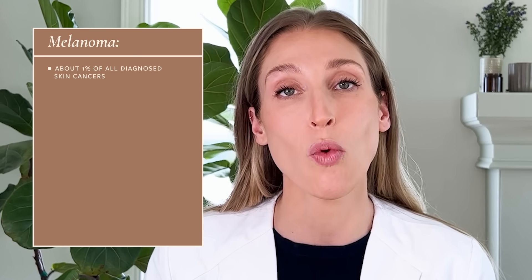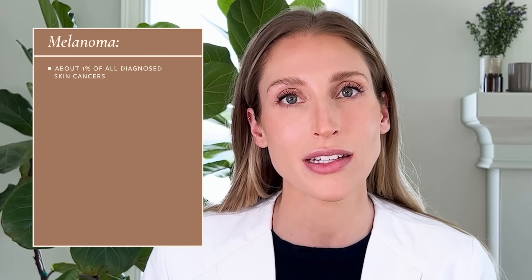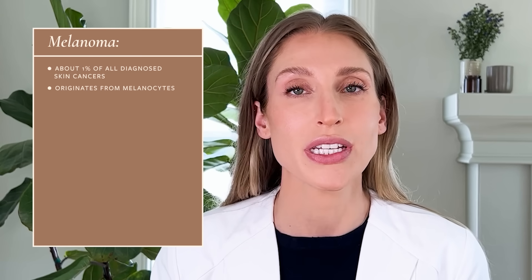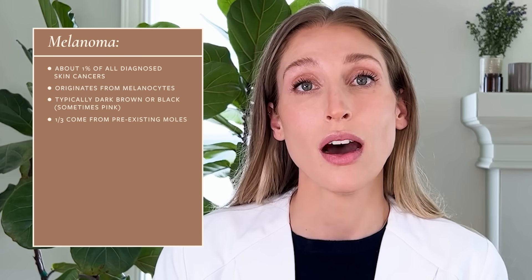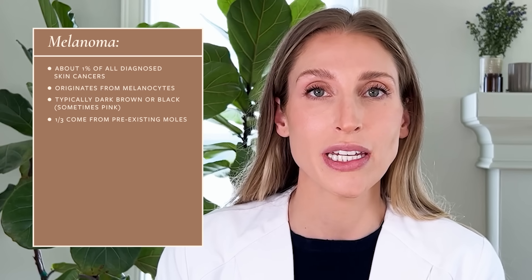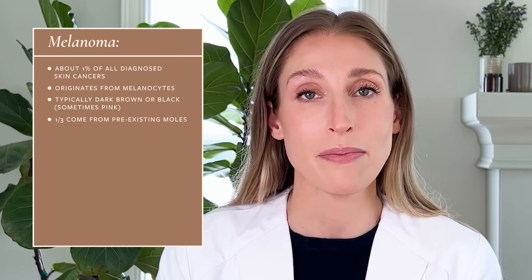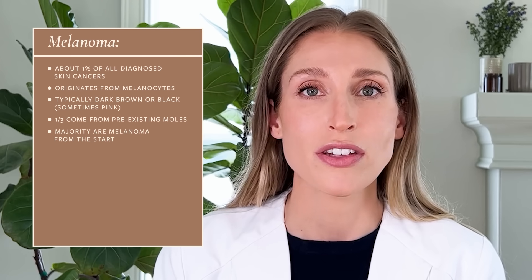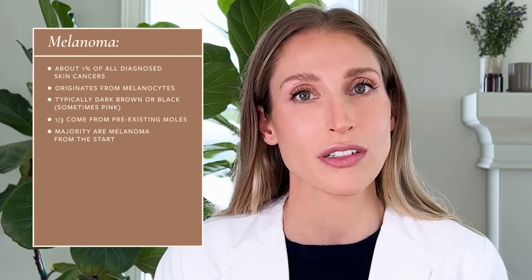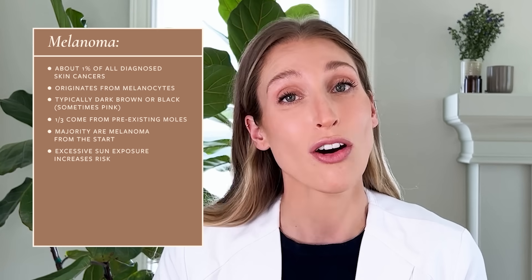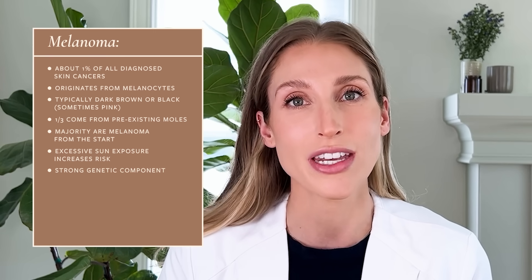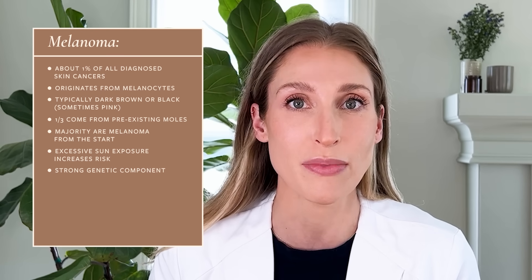The third type is melanoma, which accounts for about 1% of all skin cancers diagnosed in the United States. Melanomas originate from the melanocyte — the pigment-producing cell — which is why most melanomas are dark brown or black, though you can have pink melanomas too. About a third of melanomas come from a pre-existing mole that begins to change, but the majority just start growing as a melanoma from the start. Although excessive sun exposure is a very big risk factor, people without a lot of sun exposure can also get melanomas because melanoma has a strong genetic component.